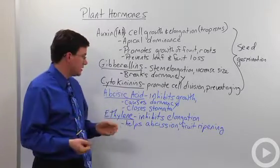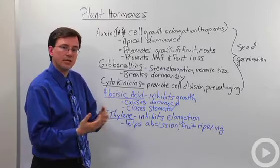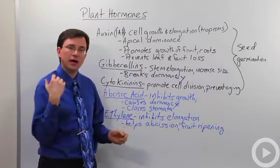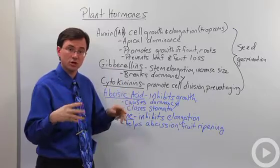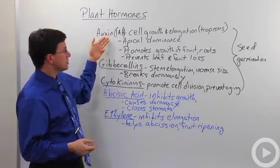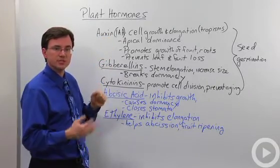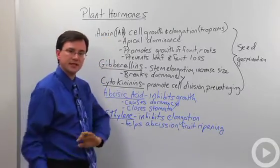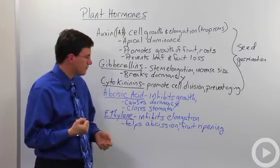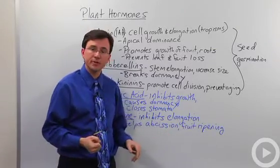Ethylene gas is involved in inhibiting elongation, inhibiting that growth. And it's actually involved in helping abscission, the dropping of leaves by plants. Typically that happens because you have a slowdown in the amount of auxin and gibberellins being produced. And then the ethylene gas gives it that final kind of push to cause the leaf to drop off. It's also involved in fruit ripening.